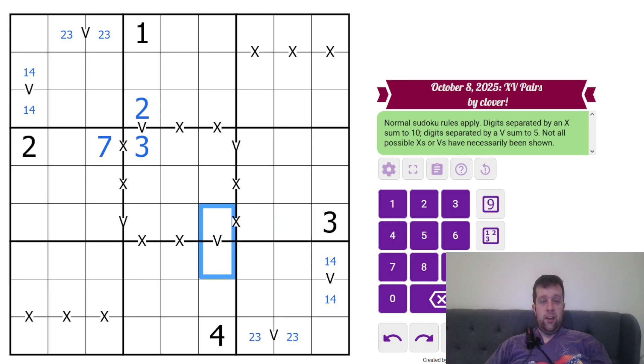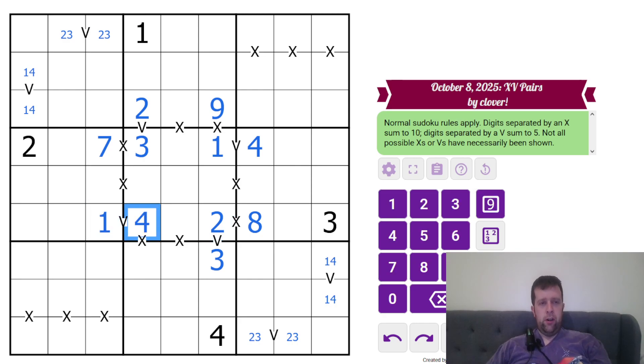This one has to be two, three, but it cannot be three there. So it has to be two, three, and eight. Now this can't be two or three, so it has to be one and four. But the four here tells us which way around that goes. One and nine make 10. Can't be two, three along here. One's going to tell us how that one goes.